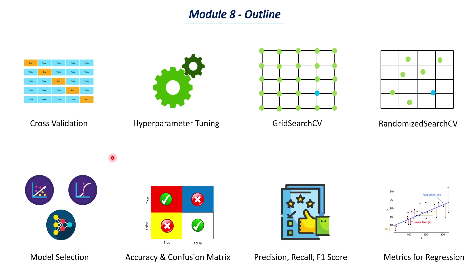So to summarize, the first part will be cross validation, hyperparameter tuning, and model selection, and the next part will be model evaluation for both classification and regression problems. I hope you are interested to learn about all of these concepts, and I'll see you in the next upload where we will be discussing cross validation and k-fold cross validation. That's it from my side — thanks for watching.